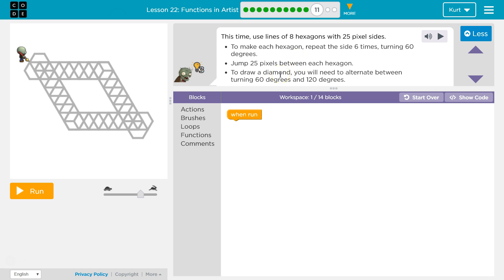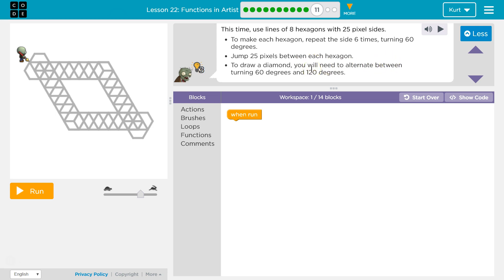To draw a diamond, you will need to alternate between turning six degrees and 120 degrees. This looks so complicated. At only 14 blocks they want us to do this in. Well let's start by getting the small hexagons.